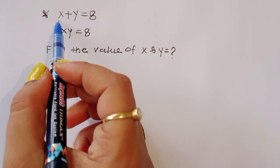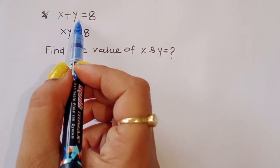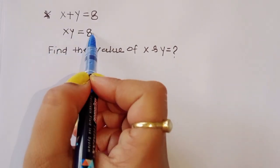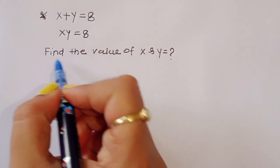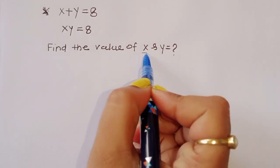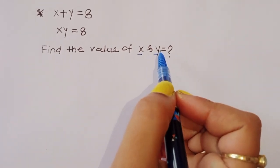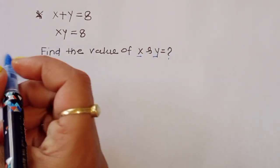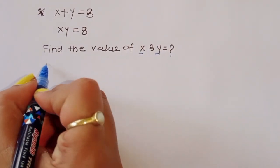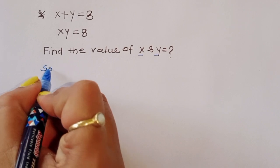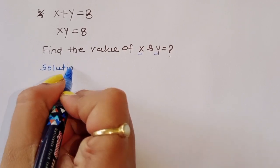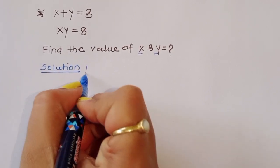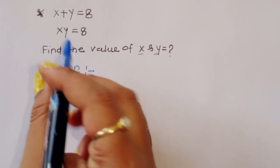The question is: given x plus y is equal to 8 and x times y is equal to 8, we have to find out the value of x and y. Let's see the solution.